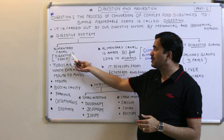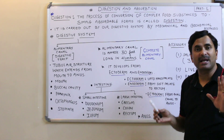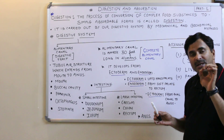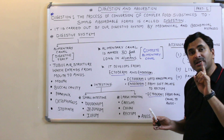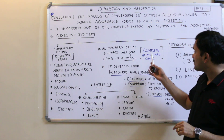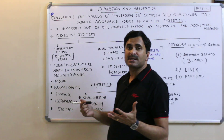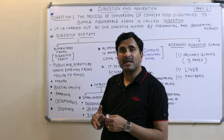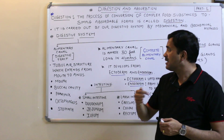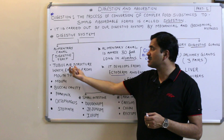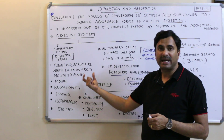In human beings, a complete alimentary canal is found, and digestion occurs in the alimentary canal. Our alimentary canal is called complete because it extends from the mouth to the anus. It is a tubular structure which extends from the mouth to the anus.